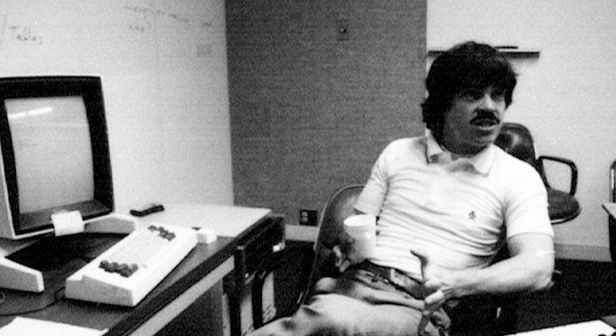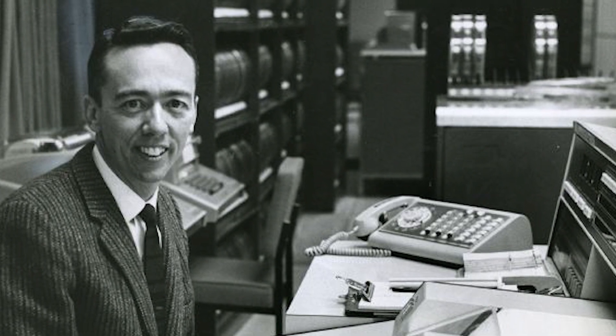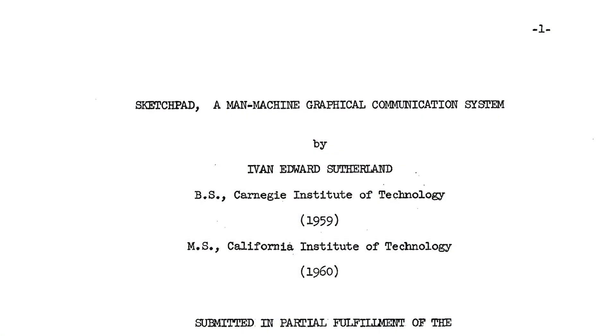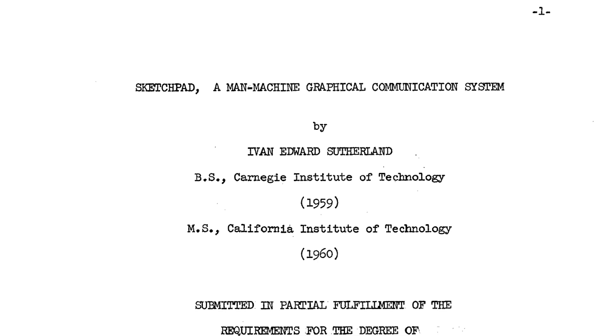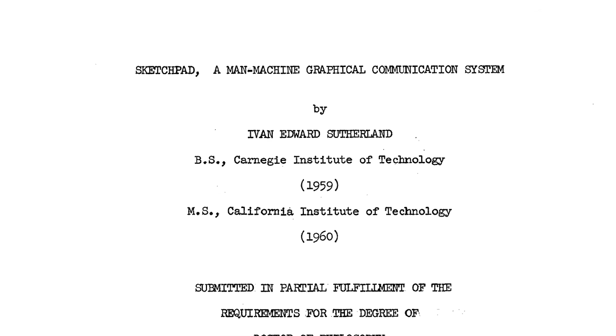Alan Kay tells the story that when he met David Evans for the first time, he described seeing a stack of brown-covered documents on Dave's desk, one of which Dave handed to Alan saying, 'Take this and read it.' The title of the document: Sketchpad — a man-machine graphical communication system. It was required reading for everyone.